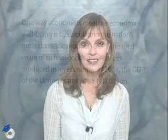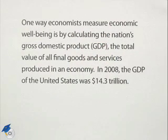Here are a couple of examples using scientific notation in calculations. One way economists measure economic well-being is by calculating the nation's gross domestic product, called GDP, the total value of all final goods and services produced in an economy. In 2008, the GDP of the United States was $14.3 trillion.